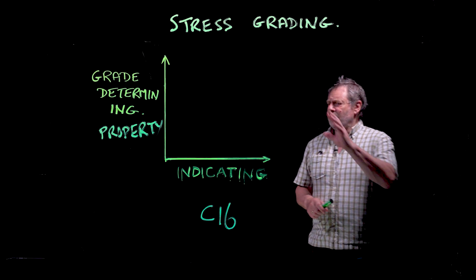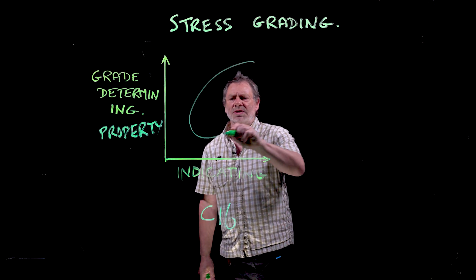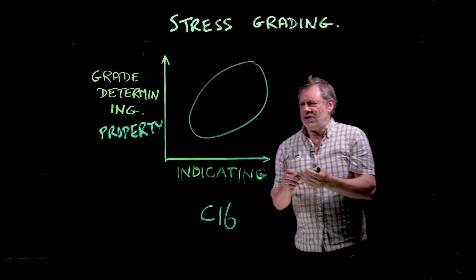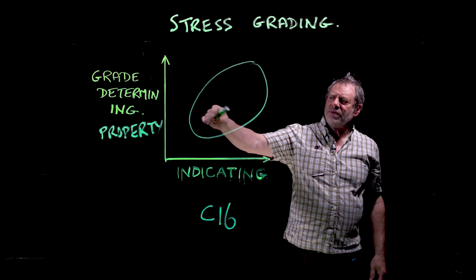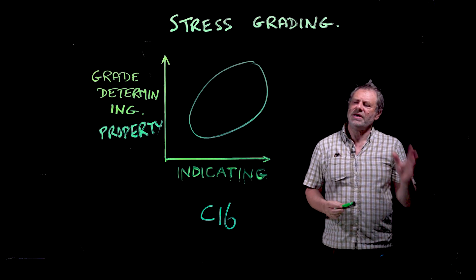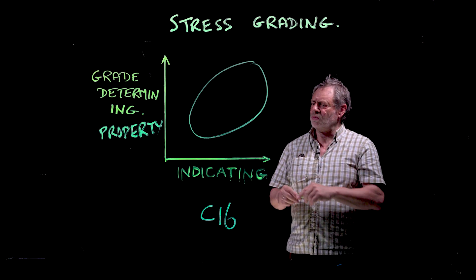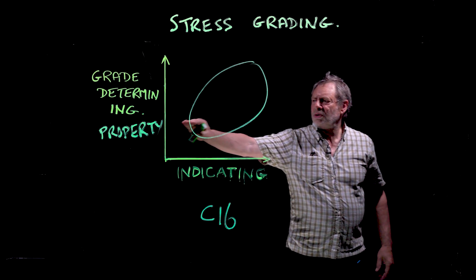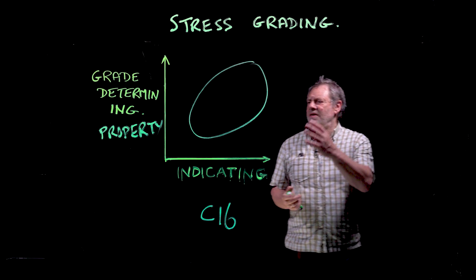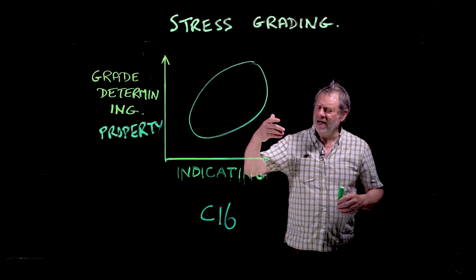When we do these experiments, we end up with some sort of distribution. That distribution might include just about all the experiments we've done with very few outliers. When we do a grade determining property in this theoretical population - let's say it's a C16 property - we have a grade determining property that runs across here, and below that, five percent of the population will sit.